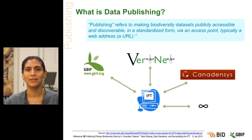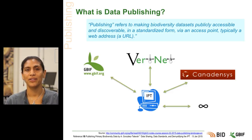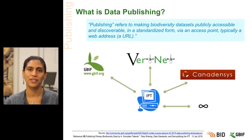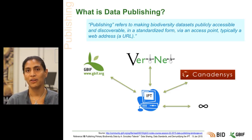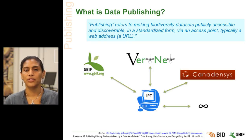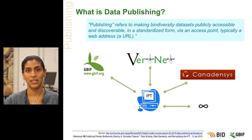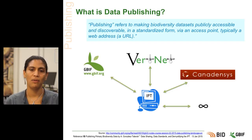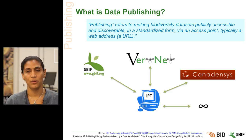So what is data publishing all about? In terms of biodiversity data, publication has a very specific definition. Publishing refers to making biodiversity datasets publicly accessible and discoverable in a standardized form via an access point, typically a web address or URL. GBIF, FurtNet and Canadensis are good examples of groups already publishing biodiversity in this way, and there are many others. What they all have in common is that they are sharing data to the public using a standard platform via the web.